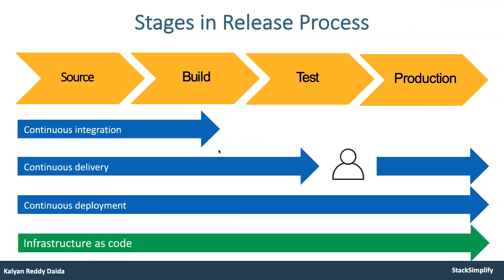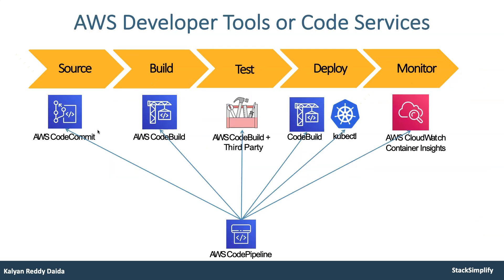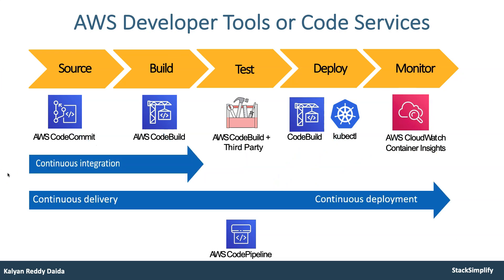Then we move on to the DevOps section, understanding release processes — source, build, test, and production — as well as continuous integration, continuous delivery, continuous deployment, and infrastructure as code concepts. We'll implement DevOps in AWS with EKS using CodeCommit, CodeBuild to generate artifacts, and deploy to the EKS cluster using kubectl and CodeBuild combination. We'll also monitor our applications using CloudWatch Container Insights.